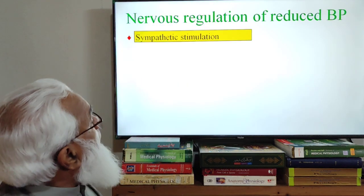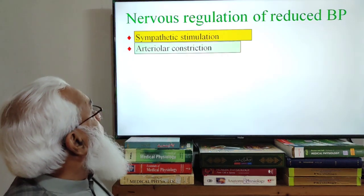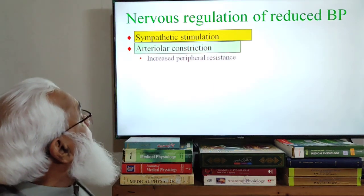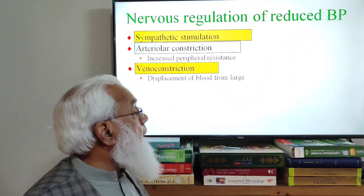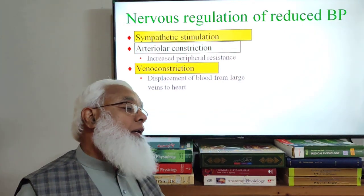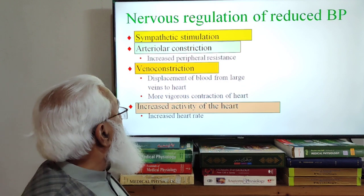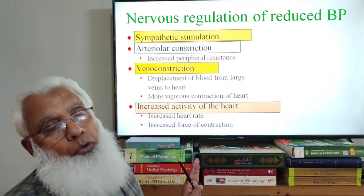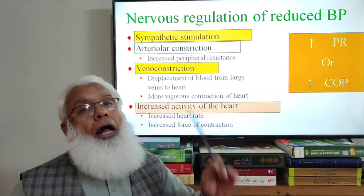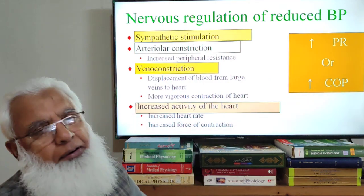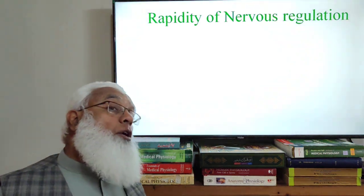Summarizing the nervous regulation for increasing blood pressure: sympathetic stimulation causes arteriolar constriction, increasing peripheral resistance. Venoconstriction displaces blood from large veins to the arterial side, increasing venous return to the heart. More vigorous cardiac contraction, increased heart rate, and increased force of contraction — all lead to increased peripheral resistance and cardiac output, which together increase blood pressure.